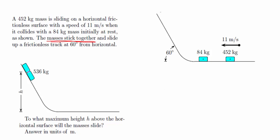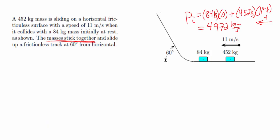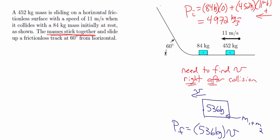Let's look at the first part — finding the velocity of the objects after they stick together using conservation of momentum. I'm making left my positive x direction, so momentum is going to be positive. The initial momentum is the momentum of the 84 kilogram object, which is zero because it's not moving, plus the momentum of the 452 kilogram object: 452 kilograms times 11 meters per second, giving an initial momentum of 4,972 kilogram meters per second to the left.